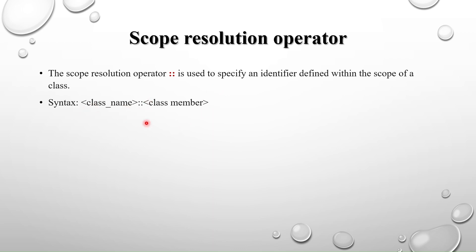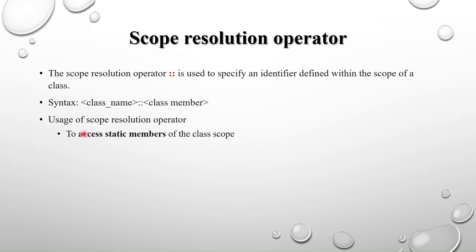The syntax is: class name, followed by the scope resolution operator. The first usage is to access the static members of the class. Without a handle of the class, we can use the scope resolution operator to access static members.